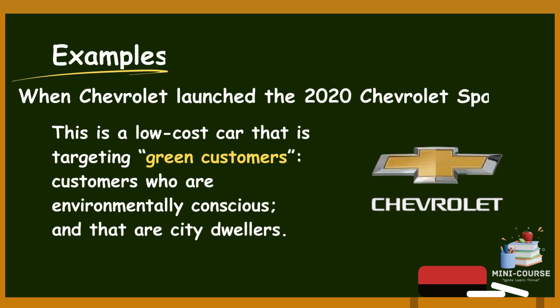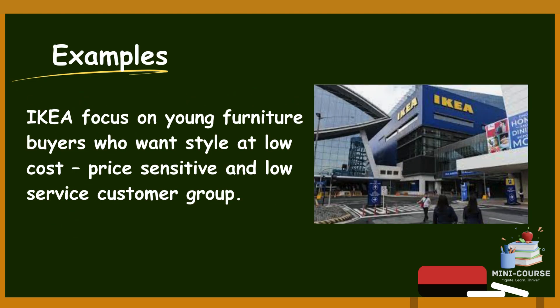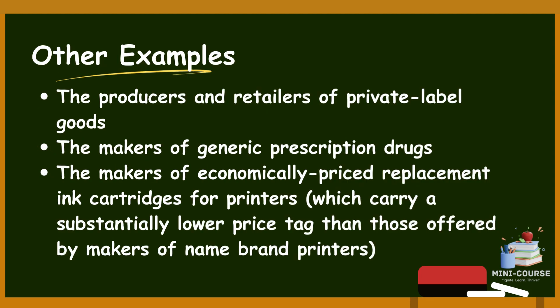Examples of companies adopting focused low-cost strategies: Chevrolet launched the 2020 Chevrolet Spark, a low-cost car targeting green, environmentally conscious customers who are city dwellers. IKEA focuses on young furniture buyers who want style at low cost — price-sensitive and low-service customer groups. Other examples include producers and retailers of private-label goods, makers of generic prescription drugs, and makers of economically priced replacement ink cartridges for printers, carrying substantially lower price tags than those offered by name-brand printer makers.